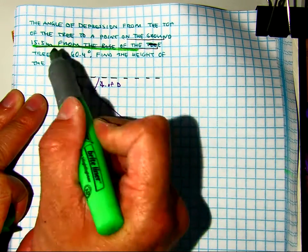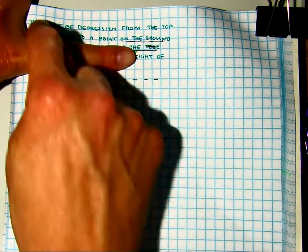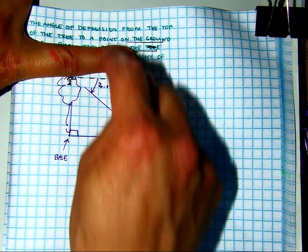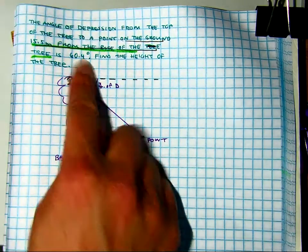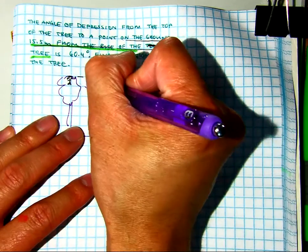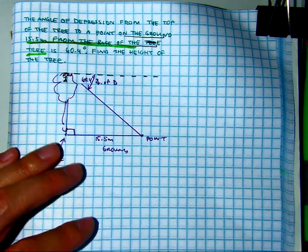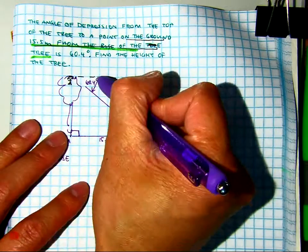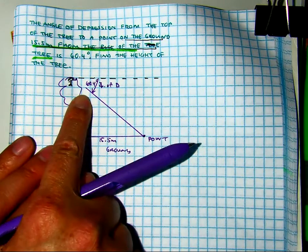The angle of depression from the top of the tree to a point on the ground is 60.4 degrees. So I'm going to label this one 60.4. Now remember, angle of depression is looking straight out then looking down. If you put your here in the top of this triangle, that would be incorrect. Find the height of the tree. So they want to know what x is.